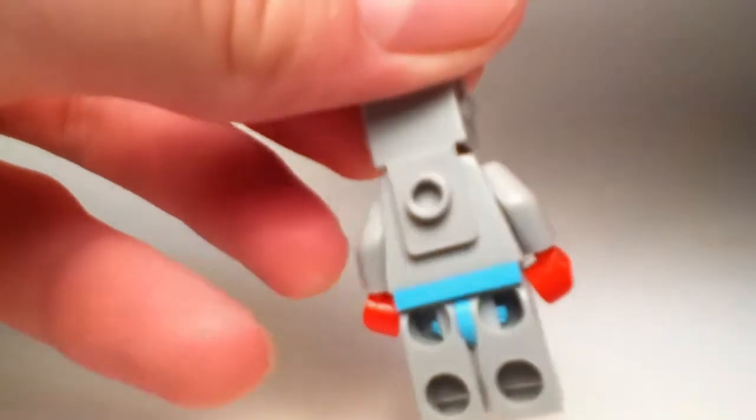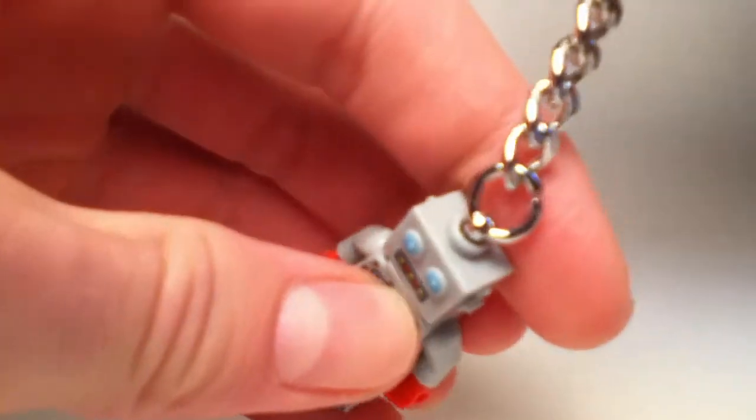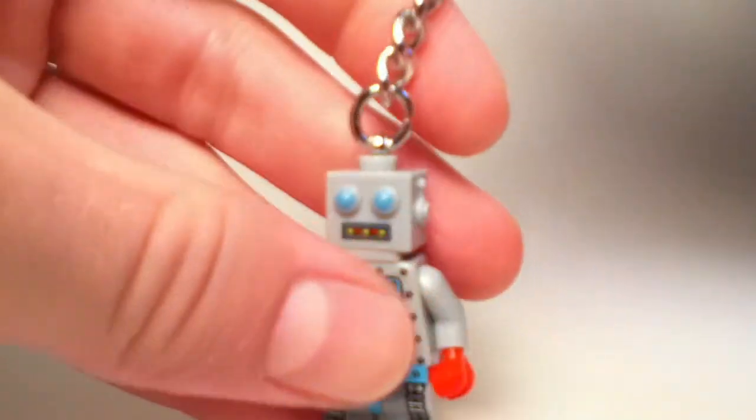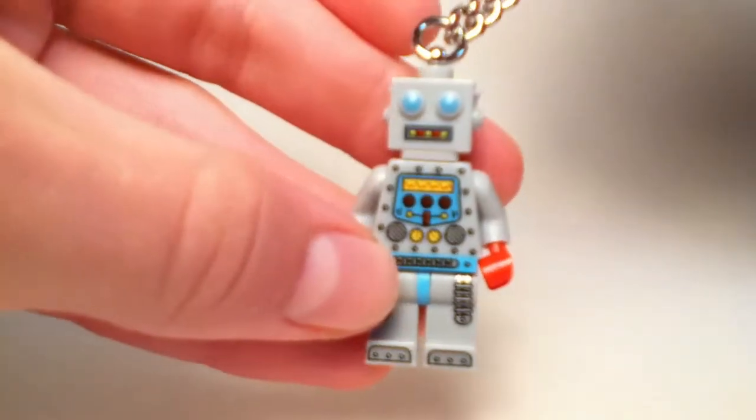As you can see, this is the robot right here and it's hung from the top of his head right there with the chain. It hangs with your keys, so I'll go ahead and just give you a closer look at the detail.